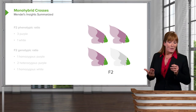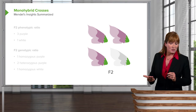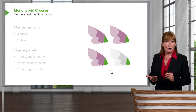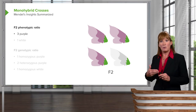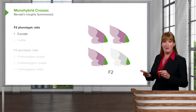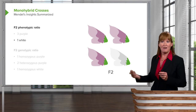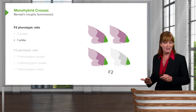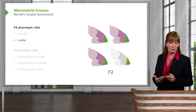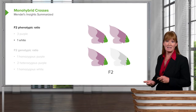In the F2 phenotypic ratio, he would always see that there were three of one form and one of the other form — in this case, purple versus white.